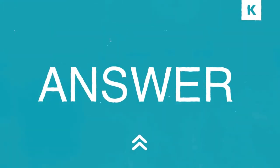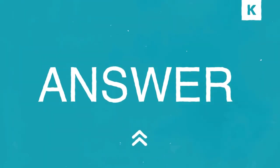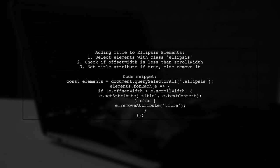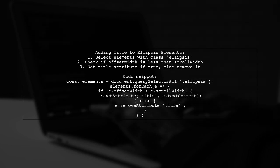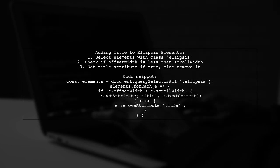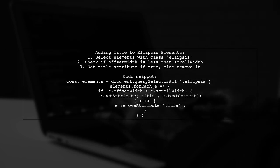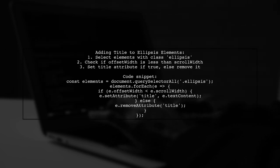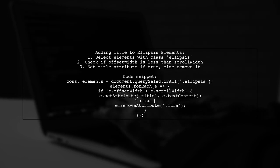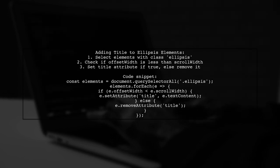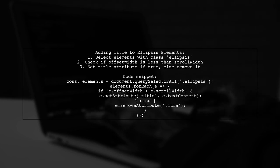Let's now look at a user-suggested answer. To add a title property to elements with Text Overflow set to Ellipsis, we can use JavaScript. The script checks if the element's width is less than its scroll width. If it is, it sets the title to the element's text content. If not, it removes the title.